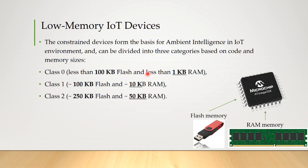The constrained devices form the basis for ambient intelligence in IoT environments and can be divided into three categories based on code and memory size. Class 0 – less than 100 KB flash and less than 1 KB RAM. Class 1 – 100 KB flash and 10 KB RAM. Class 2 – 250 KB flash and 50 KB RAM.